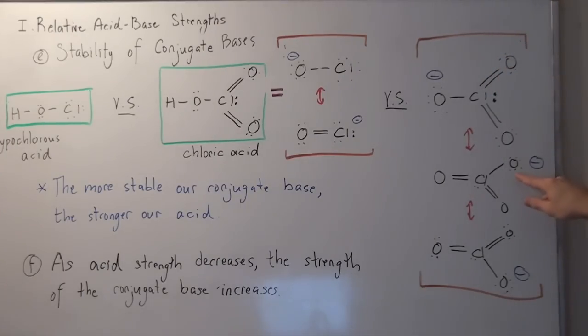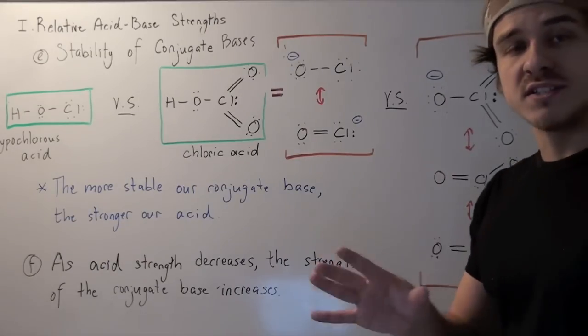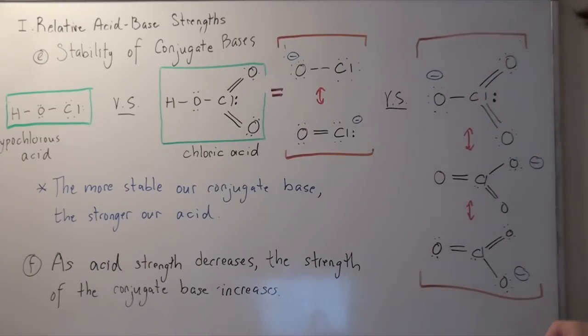And then this lone pair forms a double bond with this bond, displacing this lone pair, creating a negative charge here. In fact, a fourth resonance stabilized state exists in which three double bonds exist, and the Cl atom has a negative charge. We see that resonant stabilization is good.